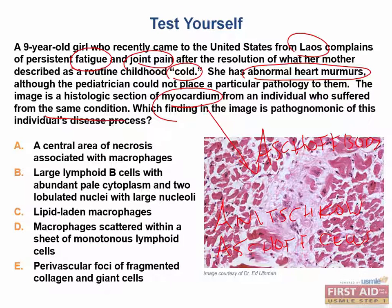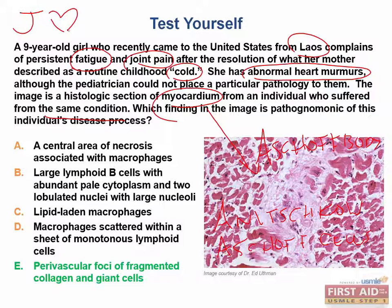With all of this in mind, we know that the answer is going to be E: perivascular foci of fragmented collagen and giant cells. Now, you have to remember to diagnose rheumatic fever with the Jones criteria. The Jones criteria includes J for joints, the O in the shape of a heart for carditis, the N for subcutaneous nodules, E for erythema marginatum, and S for Sydenham's chorea.